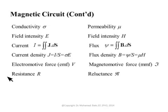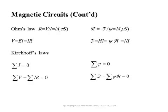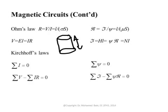We have resistance R that limits the current; we have reluctance R that limits the flux. In electric circuits Ohm's law says resistance is the ratio between voltage and current. The resistance is what limits the current, so R equals V over I. And for a resistor with length L, cross-section area S, made of conductivity sigma, the resistance is equal to L over sigma times S.